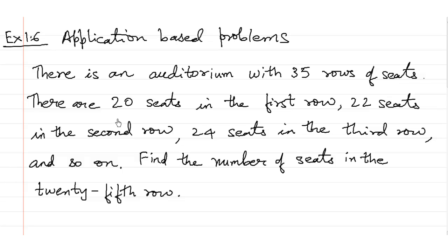Exercise 1.6 deals with arithmetic progressions. Let us take the first one. There is an auditorium with 35 rows of seats. There are 20 seats in the first row, 22 seats in the second row, 24 in the third and so on. Find the number of seats in the 25th row.